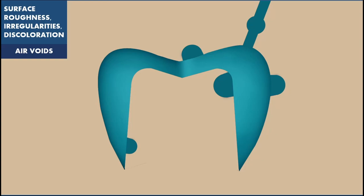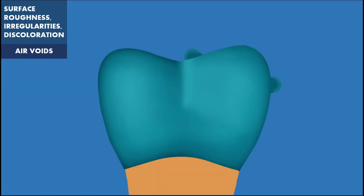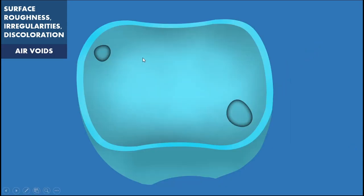Such nodules can sometimes be removed if they are not in the critical areas. However, for nodules on margins or on internal surfaces of the casting, removal of these irregularities might alter the fit of the casting. Vacuum mixing of the investment and a proper wetting agent applied over the wax pattern may be helpful in preventing the collection of air bubbles on the surface of the wax pattern.